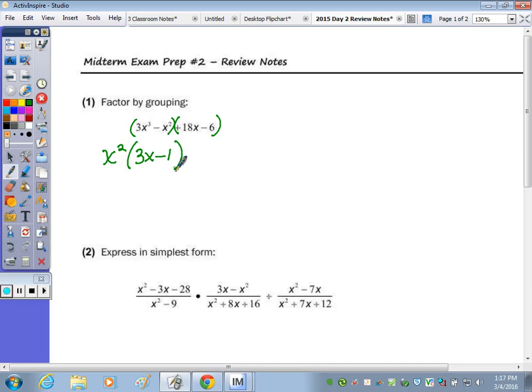GCF for 18 and 6? 6. So when there's a positive here, you pull out the GCF with the positive. If there's a negative, you pull it out with the negative. And in parentheses, 18 divided by 6 is 3, so 3x minus 1. These should match.